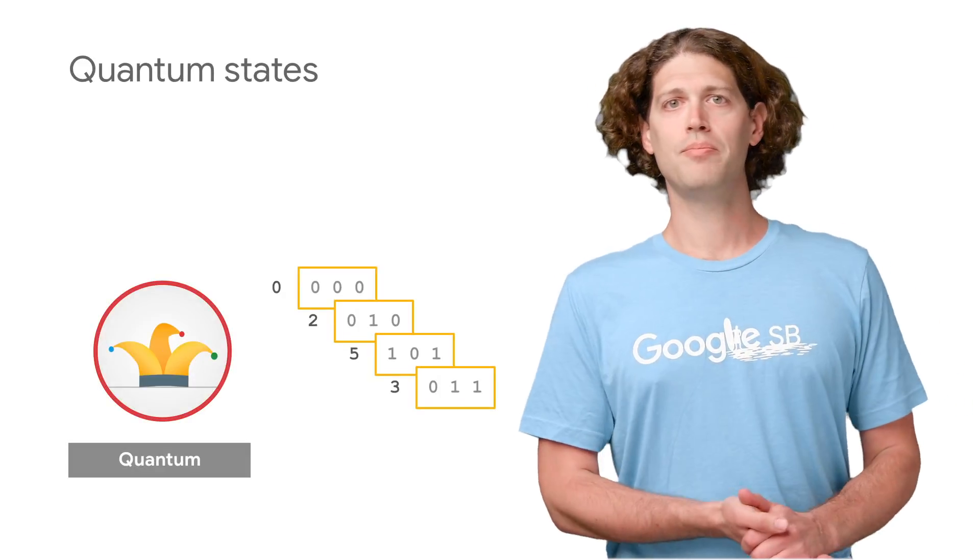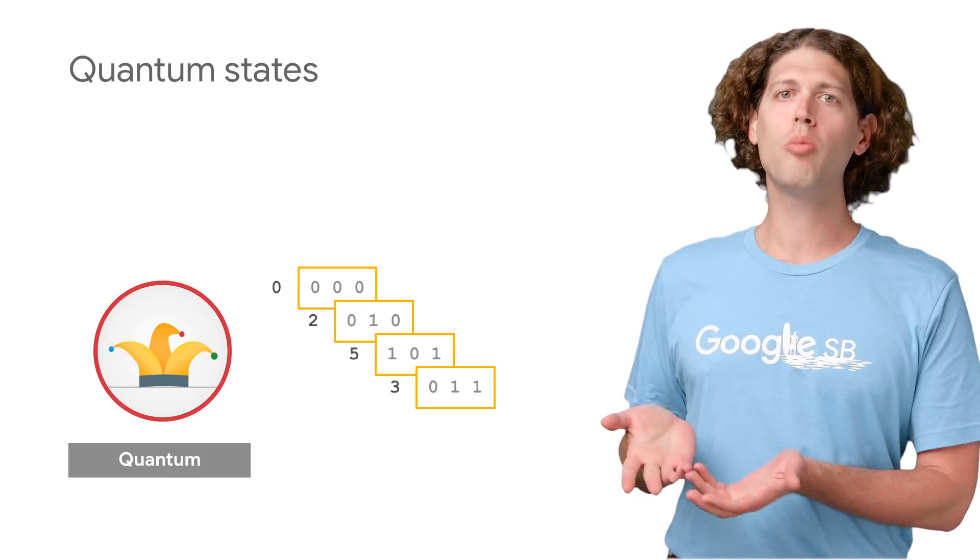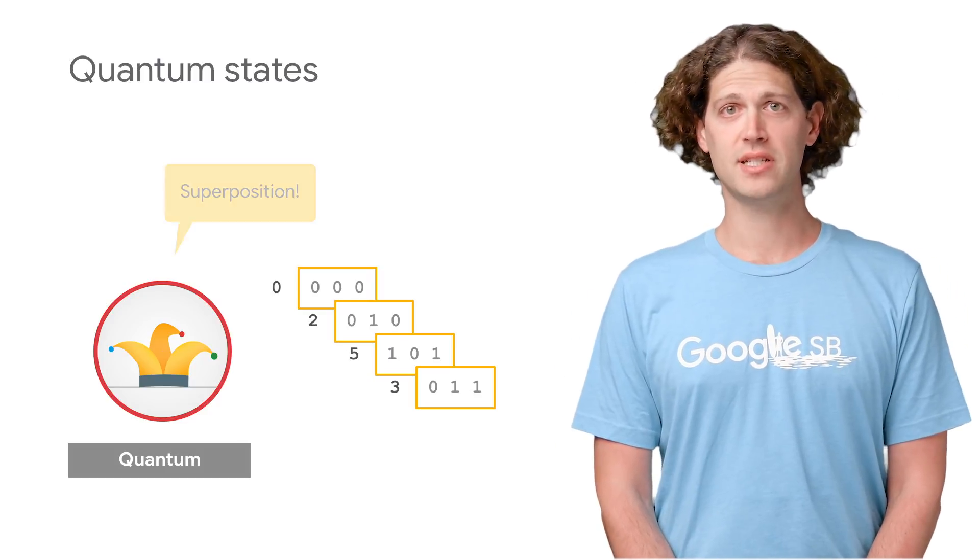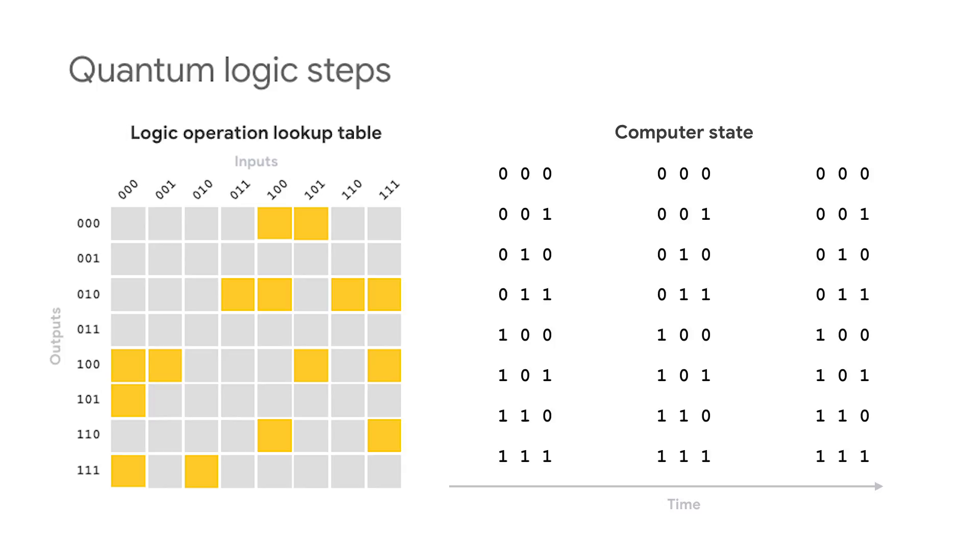Compared to classical states, quantum states are more rich. They can have weight in all possible classical states, a situation physicists call superposition. Each step of a quantum algorithm mixes the states into complex superpositions.